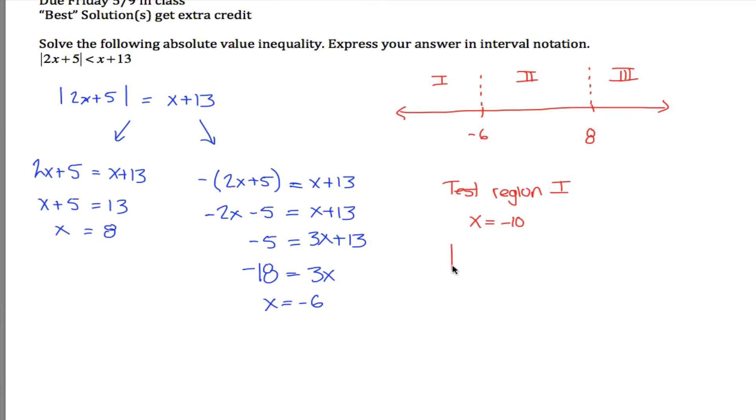And the question is, is 2 times negative 10 plus 5 absolute value less than negative 10 plus 13? Well, 2 times negative 10 is negative 20 plus 5 would be negative 15. Negative 10 plus 3 is 3.